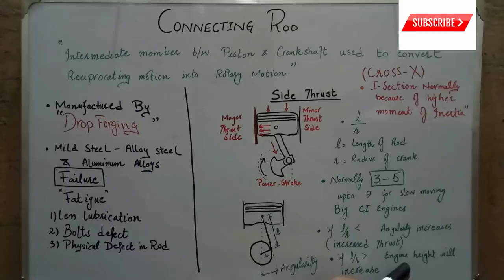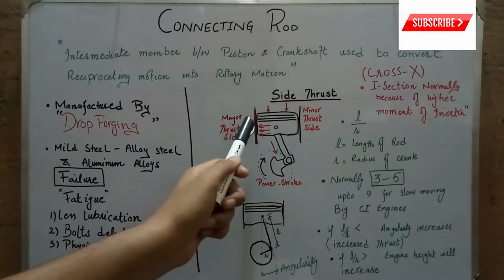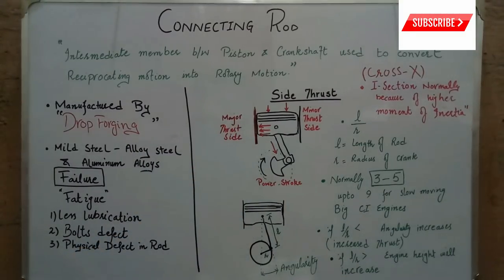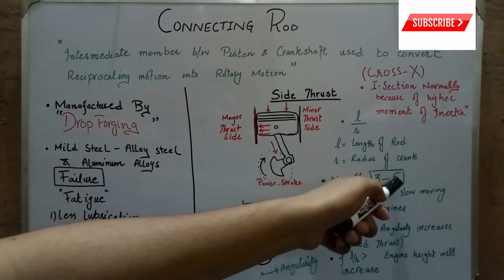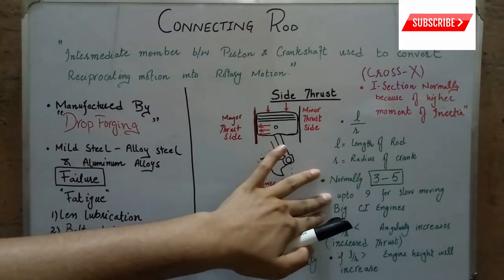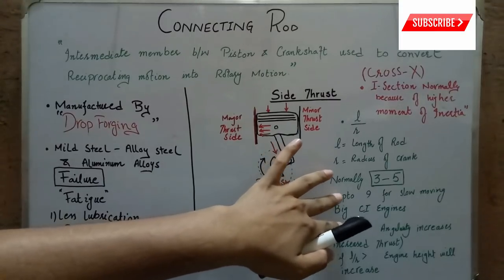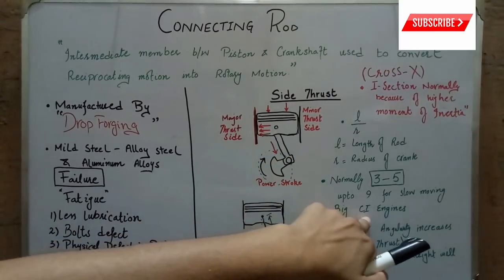We have to compromise between the engine height and the side thrust. Normally for small fast-moving engines, the L over R ratio is between 3 to 5, and it is sometimes up to 9 for slow big CI engines.